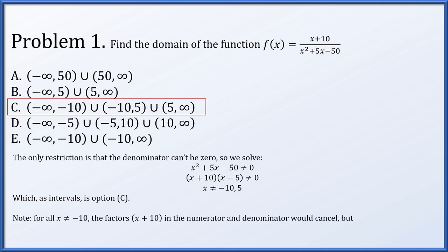By the way, we have a factor of x plus 10 in the numerator and also a factor of x plus 10 in the denominator. Can we cancel them out? If x is not equal to negative 10, then yes, but if x equals negative 10, we would have zero over zero, which does not exist. Those two factors would not cancel specifically for negative 10, and this is why negative 10 is still not in the domain of this function, even though you might want to cancel the factors x plus 10 over x plus 10.